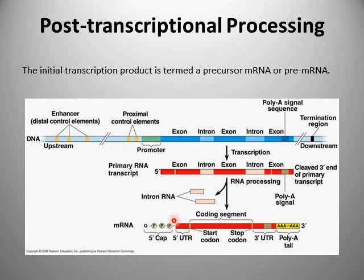Once you have spliced the introns out and added the 5' cap and 3' poly-A tail structures to the mRNA, you then have what is known as a mature mRNA molecule, and this molecule is then ready to be exported to the cytoplasm and translated into protein.